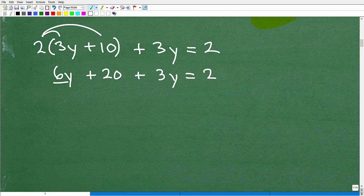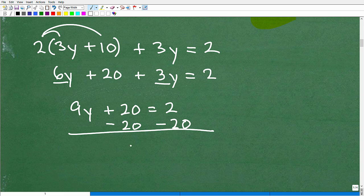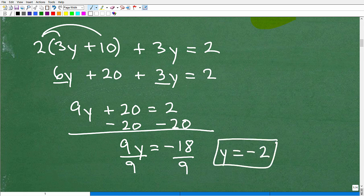Let's solve for y. That's going to be 2 times 3y is 6y plus 2 times 10 is 20 plus 3y = 2. Let me give myself some room here. So 6y and 3y is 9y, so that's 9y + 20 = 2. I've got to move the 20 to the other side, so I'm going to subtract 20 from both sides. I get 9y = -18. When I divide both sides by 9 to solve for y, I get y = -2.